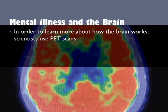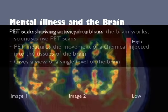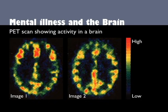In order to learn more about how the brain works, scientists use specialized imaging techniques. One technique is called positron emission tomography, or PET. PET measures the movement of a radioactive chemical injected into the tissues of living subjects, and it gives a view of a single level of the brain. These two PET images differ in color distribution and pattern. Image 1 shows a healthy brain at rest, while image 2 is the brain of someone who has schizophrenia, a mental illness. These PET images show that the brain of a person with a mental illness is different from that of a person without one.